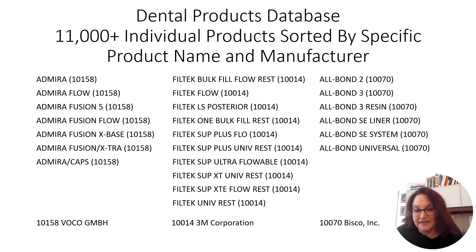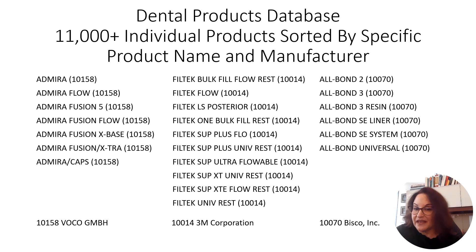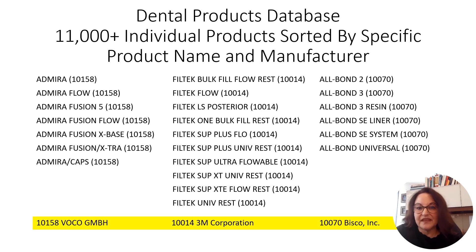The dental product database is massive. We have over 11,000 products, all sorted by product name, the manufacturer, and categorized by dental usage. For example, on the left we have a common composite line called Edmira, manufactured by VOCO GmbH. There are seven individual products in the Edmira line, each with its own formulation and listed by specific product name. In the middle we have the Filtec composite line manufactured by 3M, and on the right we have the all-bond product line manufactured by Bisco. Each individual product is followed by a five-digit number corresponding to Biocomp Labs' internal numbering system of manufacturers.